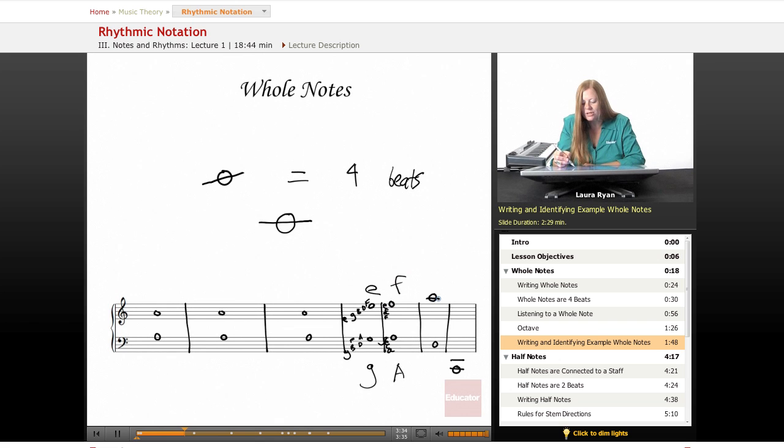Okay, here's a ledger line. We're going to count from our top line of the treble clef up to that ledger line note. This we know is an F, right, so then we go G is the space above F. And A is the line above the G space. So this is an A.